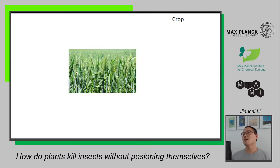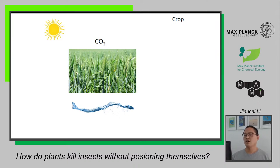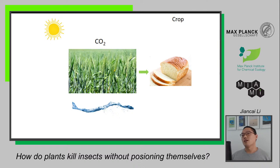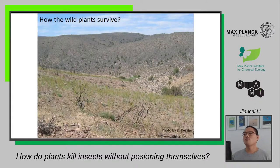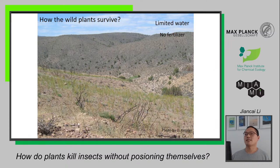Thinking about insects and plants, many people may imagine a crop in the farm — the plants take water from soil, carbon dioxide from the environment, using sunshine to produce sugar or starch, and finally offer you bread. But if you're a farmer, you realize it's not that simple. You need a lot of effort, fertilizer, and insecticide when pests come. But how about wild plants? No one supports them — there's extremely limited water, no fertilizer, and no one spreads insecticide when herbivores come.